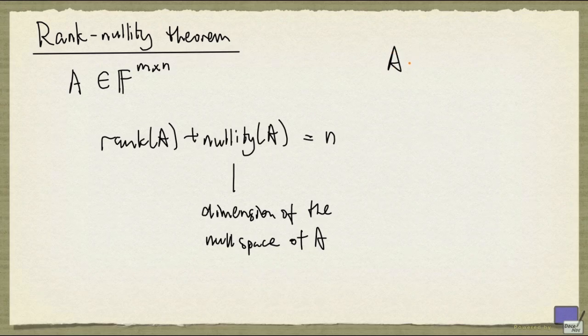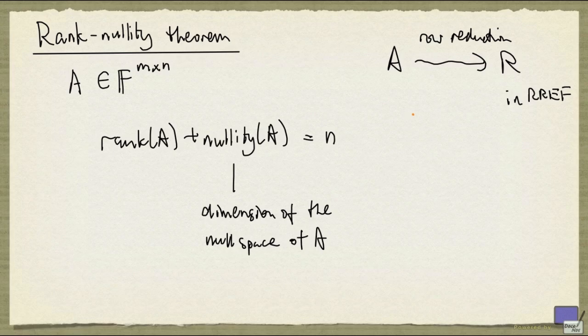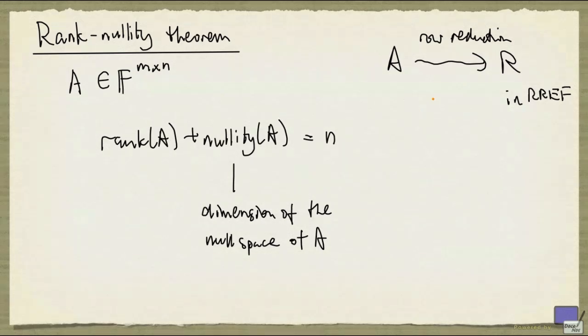What you do is, you first row reduce this matrix to a matrix R in reduced row echelon form. The key is that row reduction does not change the row space of a matrix, and it also does not change the null space of a matrix.